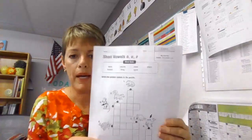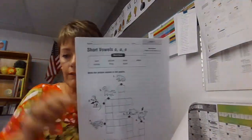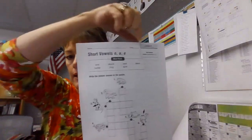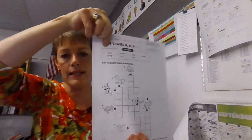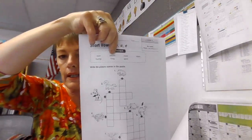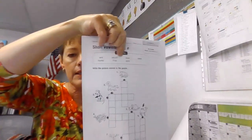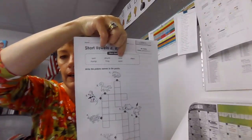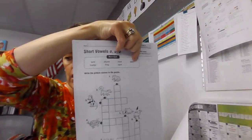So let's look up at the word bank. The word bank. The first word in the word bank is tent. Then the next one is skunk. The next one is nest.